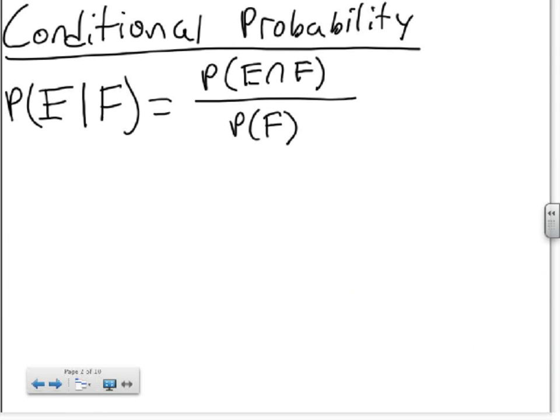First thing we're going to discuss is conditional probability. The definition of conditional probability is when you're trying to find the probability of event E when given event F, assuming the probability of event F is greater than zero, then that probability equals the probability of E and F over the probability of F.